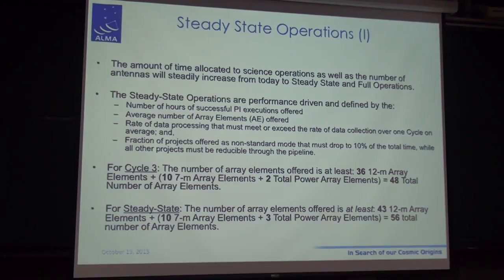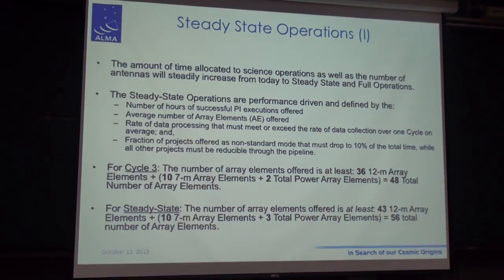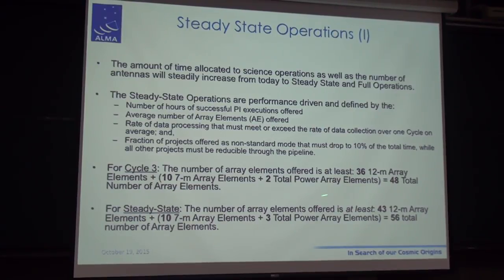We are currently in a ramping phase where we left construction and are gradually moving to full operations. The steady-state operations will be performance-driven and defined by the number of hours, the average number of array elements offered, the rate of data processing, and the fraction of proposals offered. For Cycle 3, the total number of array elements is 36 12-meter array plus 10 7-meter plus 2 total power — 48 in total — and in fact we have greater numbers than that. For steady state, the idea is to have 43 12-meter antennas, 10 7-meter, 3 total power — 56 in total on that range.